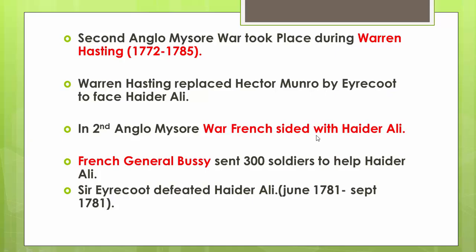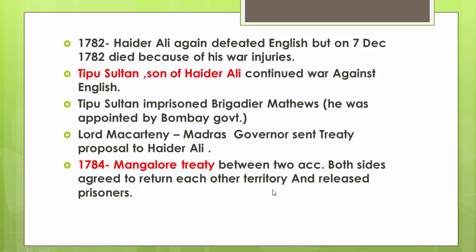The second Anglo-Mysore war took place during the time of Governor General Warren Hastings (1779–1785). Warren Hastings replaced Hector Munro with Eyre Coote to face Haider Ali. During this war, the French sided with Haider Ali, and French General Bussy sent 3,000 soldiers to help him. Eyre Coote was successful in defeating Haider Ali, but in 1782 Haider Ali again defeated the English.